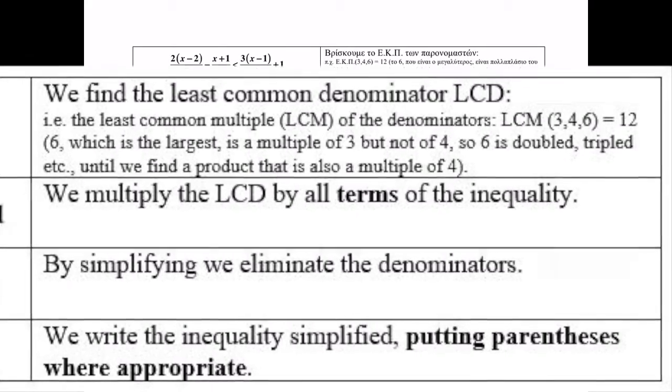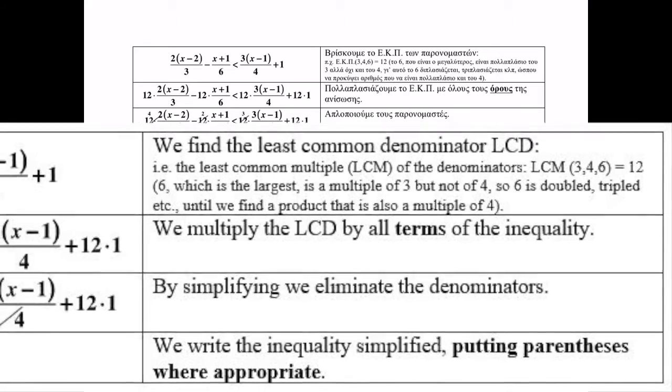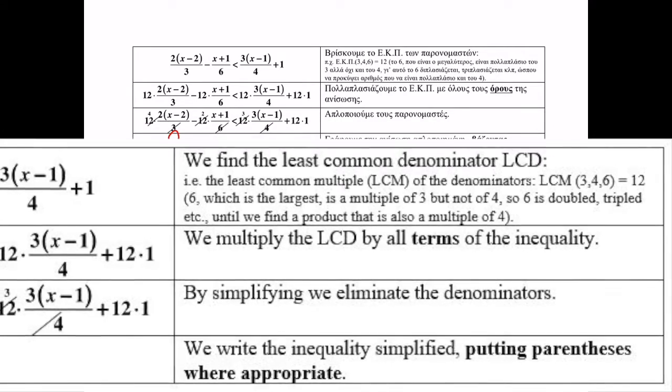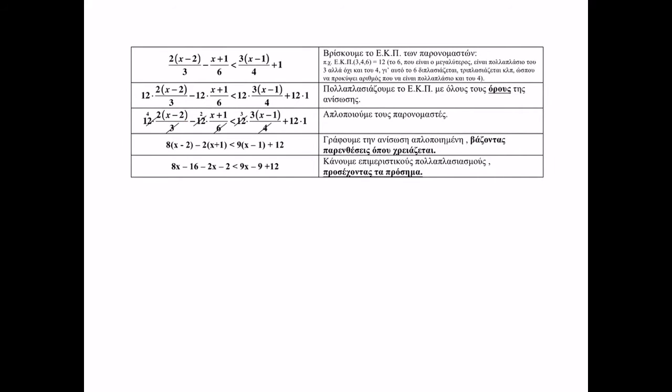Then, we multiply using the distributive property, paying extra attention to the signs. Plus 8 times plus x equals 8x and plus 8 times minus 2 equals minus 16. Then, pay attention. Minus 2 times plus x equals minus 2x and minus 2 times plus 1 equals minus 2.